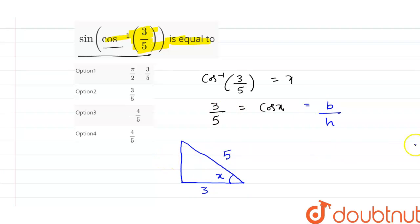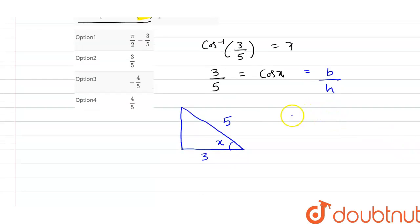To find the perpendicular, we use Pythagoras theorem: √(25 - 9) equals p. So p equals 4.